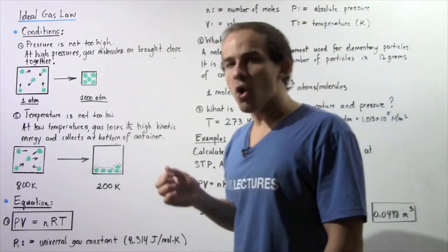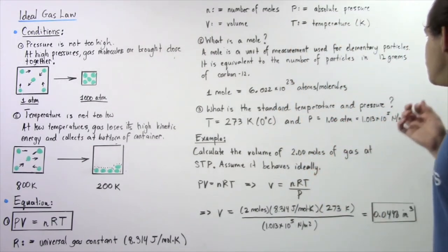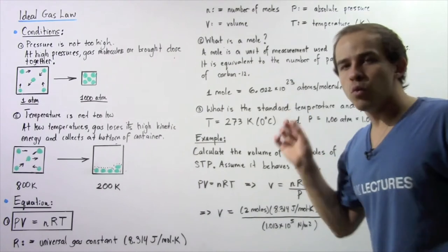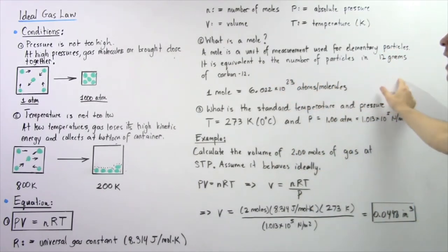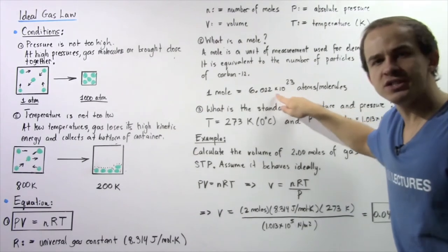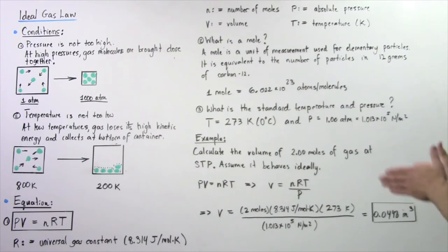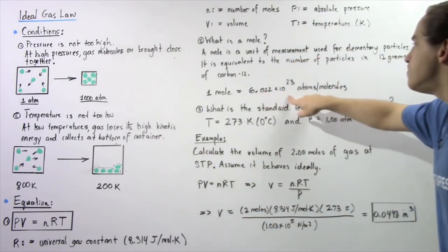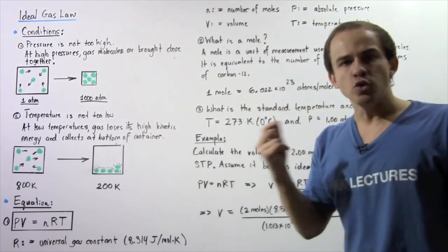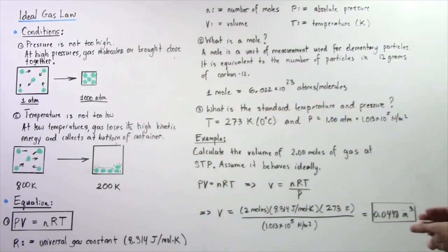So let's discuss what a mole is. What exactly is a mole? Well, a mole is essentially a unit of measurement used for elementary particles such as atoms and molecules. It is equivalent to the number of particles found in 12 grams of carbon-12 isotope, and this number is 6.022 times 10 to the 23 atoms or molecules. So in 12 grams of carbon-12 isotope, there are this many atoms. And we define one mole to always be this quantity of atoms. So 2 moles equals 2 times this amount, 3 moles equals 3 times this amount, and so on.